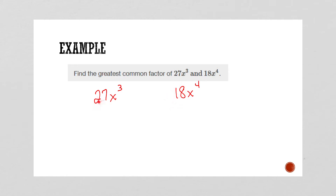I know 18 will not go into 27. So what's another factor? How about 9? Does 9 go into 27? Yes, totally does. So 9 is going to be our GCF of the numbers. Now check out your x's — I've got three of them here. I can't pull four x's out of three, so the most I can pull out is three. So we would have 9x³ as our GCF.